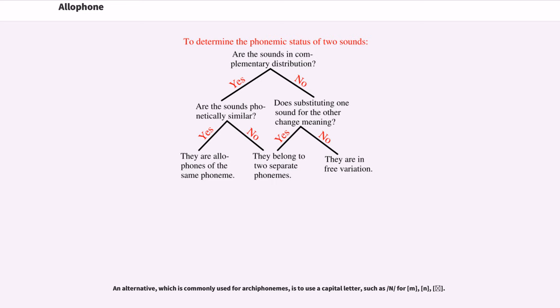An alternative, which is commonly used for archiphonemes, is to use a capital letter, such as /N/ for m, n, ŋ. In rare cases, a linguist may represent phonemes with abstract symbols, such as dingbats, to avoid privileging any particular allophone.